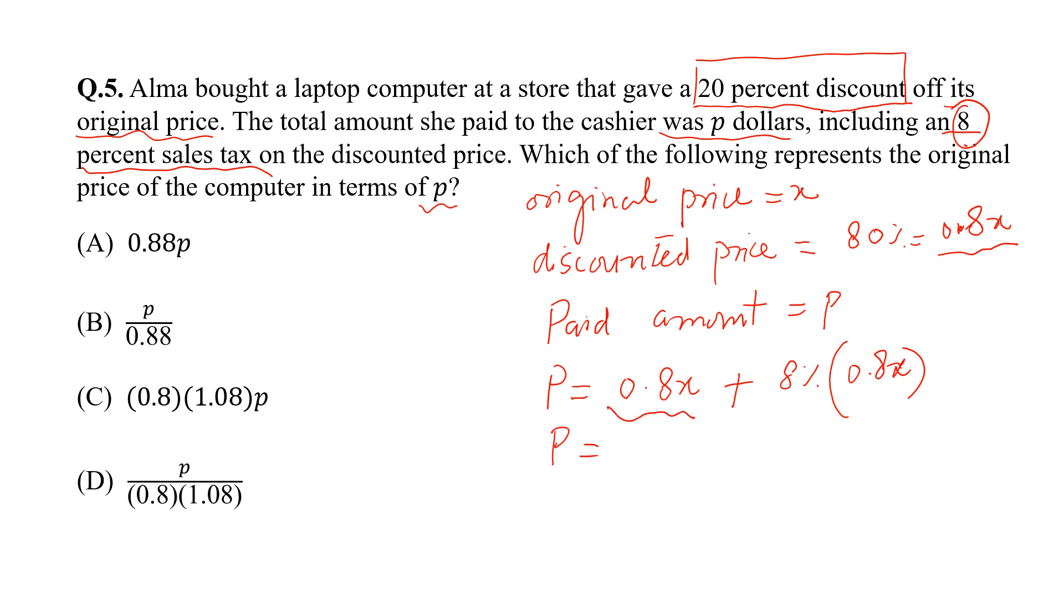By taking 0.8X common from this, we get 1 plus 8%, and 8% is 0.08. So this is equal to 0.8X into 1.08. We can write it like this, X into 0.8 into 1.08. Dividing these two from both sides, we can get X is equal to this. And this is the right answer.